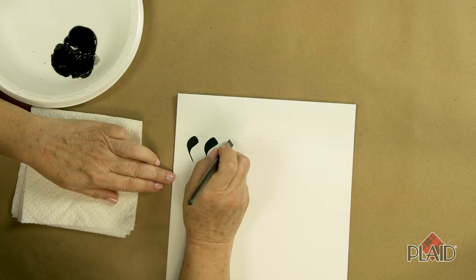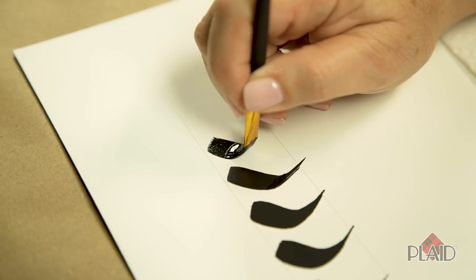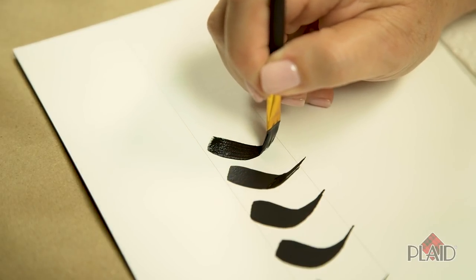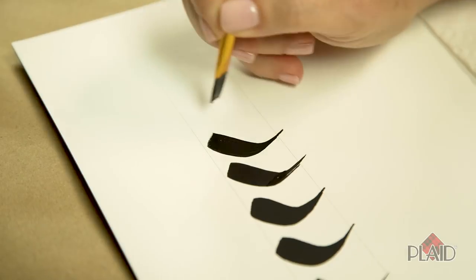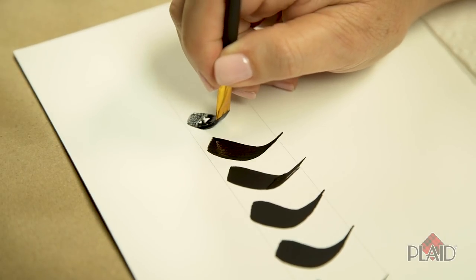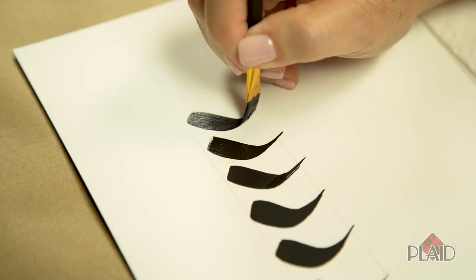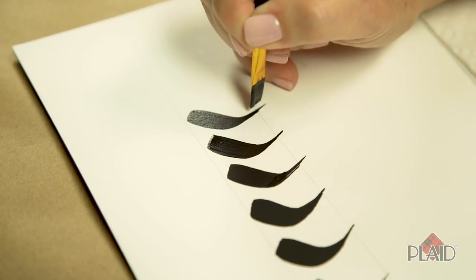So let's try it like this. We're going to touch, apply pressure, begin to pull, lift and drag as I'm pulling towards me. And again, I'm going to end up on that chisel edge of the stroke. And that's how you create a comma stroke to the right.